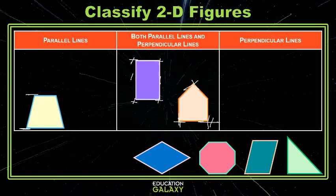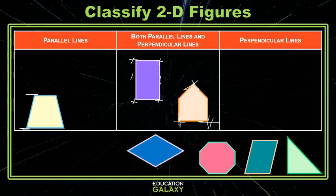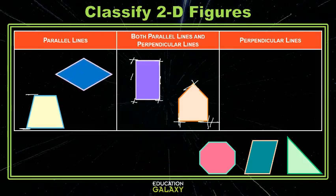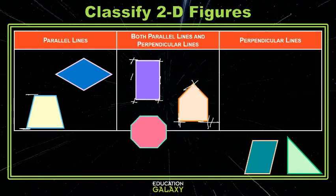The parallelogram that is next has two sets of parallel sides. I don't see any right angles, so no perpendicular lines. So he just goes in our parallel lines section. The octagon appears to have several pairs of parallel sides, but no right angles and no perpendicular lines.